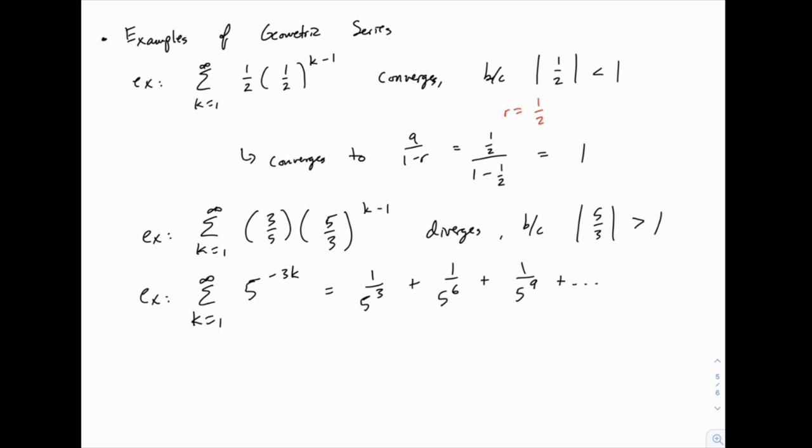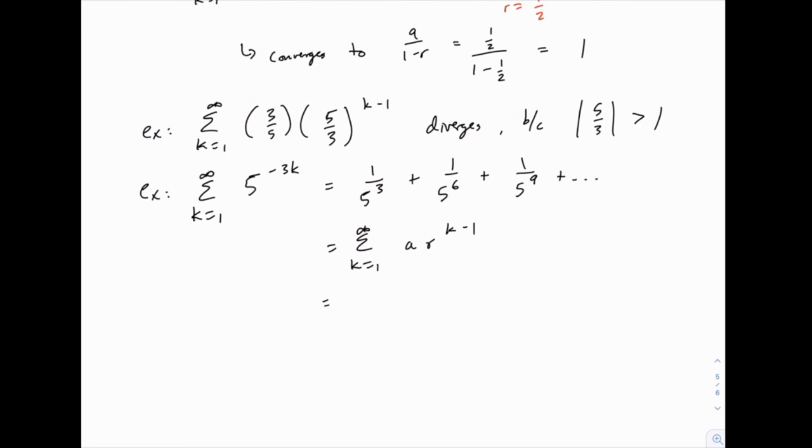If you multiply each term by 1 over 5 to the third, you'll get the term that follows. So in our general structure a r to the k minus 1, the value of r in this example is 1 over 5 to the third. And remember that the value of a is simply whatever the first term in the series is, which also happens to be 1 over 5 to the third.